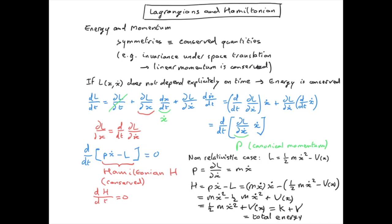So what we call the Hamiltonian is nothing else but the total energy, the sum of kinetic energy plus potential energy of the system, and we see that it's conserved.